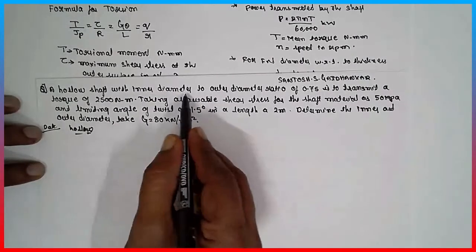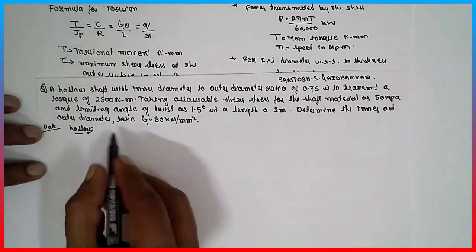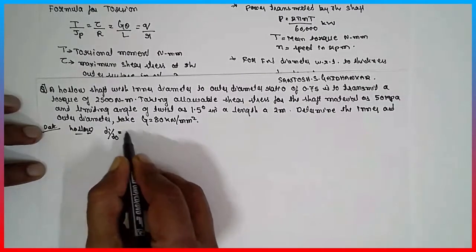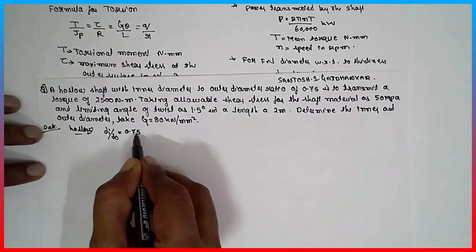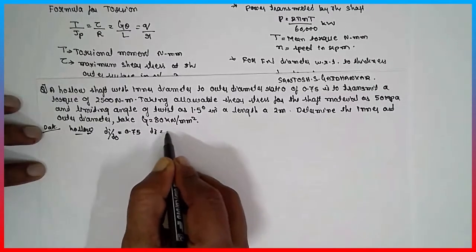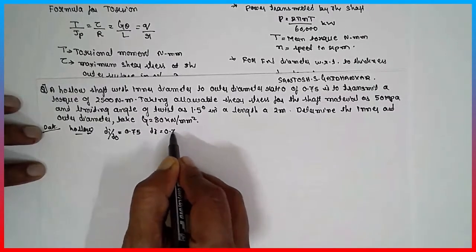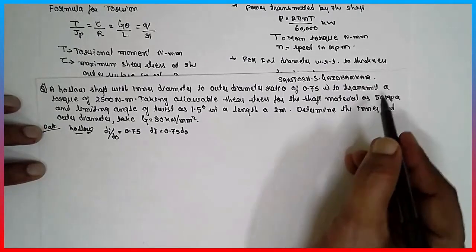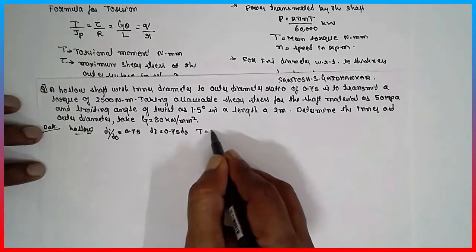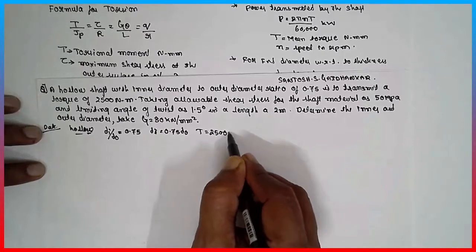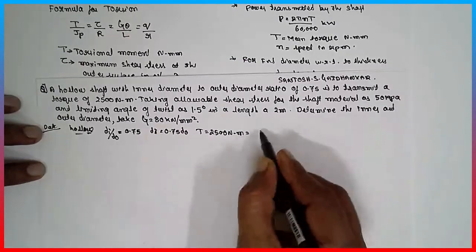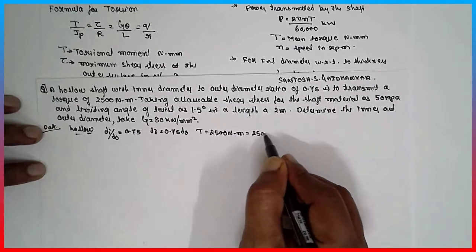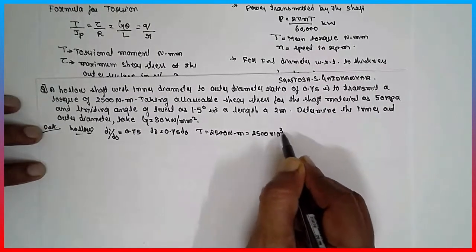The inner diameter to outer diameter ratio is given as 0.45, that means Di is equal to 0.45 Do. The shaft is used to transmit a torque T equal to 2500 Nm. Converting to N·mm: 2500 × 10³ N·mm.